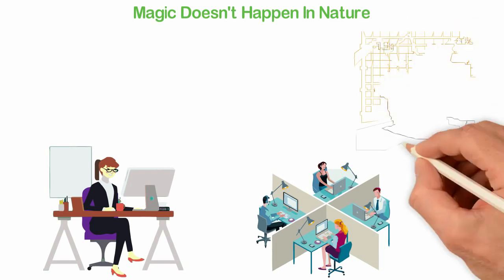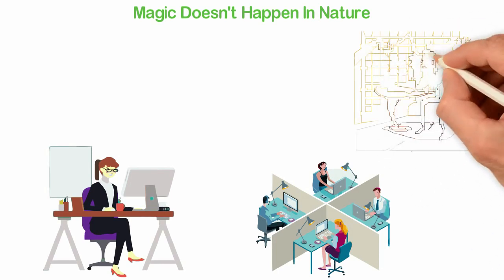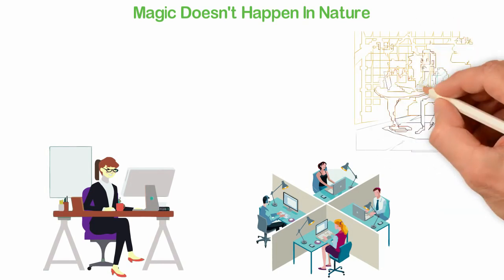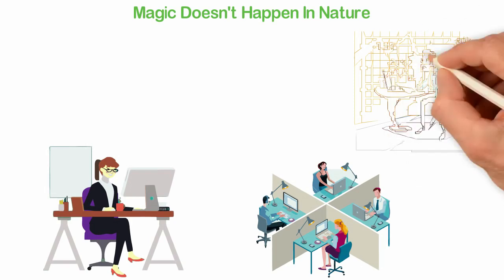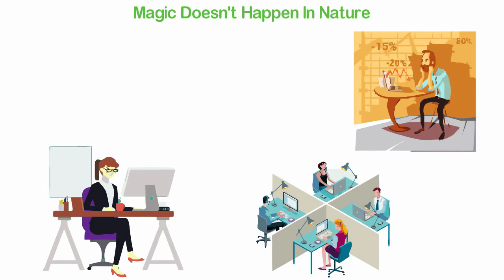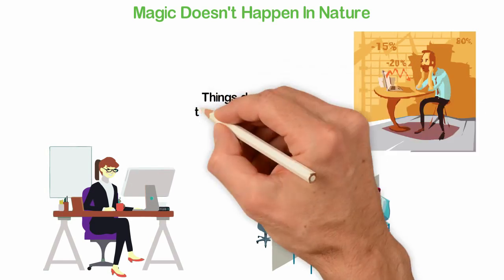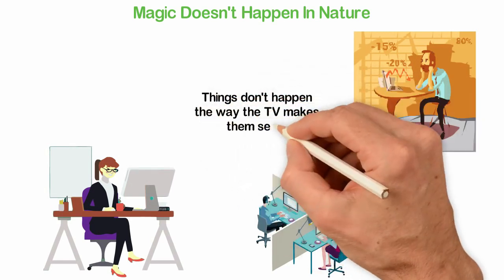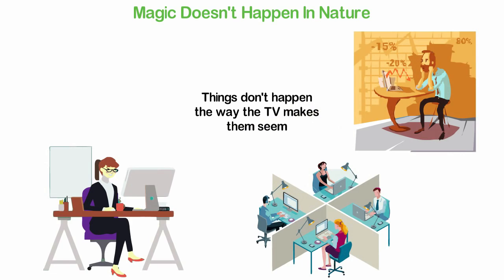An average inventor had to spend decades alone in a laboratory before the world even knew he existed. An average entrepreneur wastes his first 10 years before you see his first cars. Things don't happen the way the TV makes them seem, and if you don't understand this, you think that something is wrong with you.